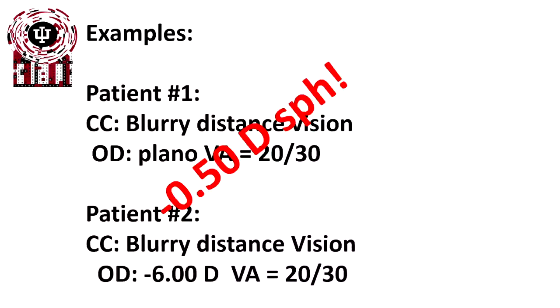In both cases, it's a half diopter of more minus. The problem is at distance, and we've reduced by two lines, 20/25 and 20/30. So it's a half diopter change. The new prescriptions for patient one would be minus 0.50 sphere. The new prescription for patient two would be minus 6.50 diopters.